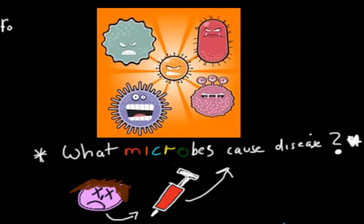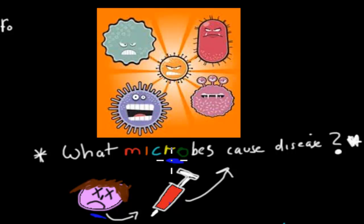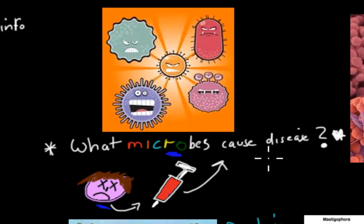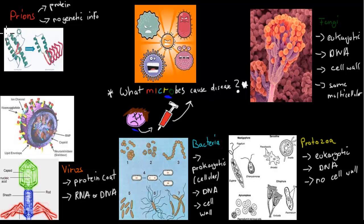Once people realized that microbes cause disease, they looked at many people who had disease, took their blood, and asked: what kind of microbes can you find in their blood? What kind of microbes cause disease? There are lots of different types of microbes — for example, prions, which are just a protein with no genetic information. We have viruses, which have a protein coat but also RNA and DNA as their genetic information.